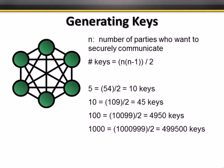Another problem with shared key systems: any two parties need a shared key between them to communicate. As the number of parties who want to communicate securely increases, the number of keys increases exponentially. For example, just five people need ten keys between them, but a thousand people require 499,000 keys.